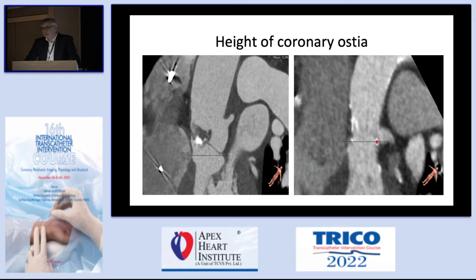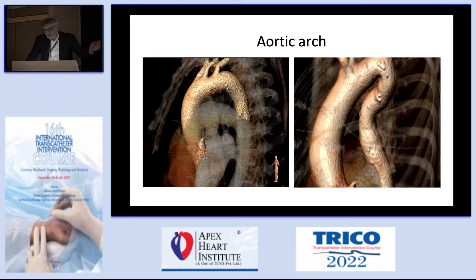You also need to bring the valve in through the aortic arch. On the left-hand side you see a smooth aortic arch, but you will also see patients who have a quite acute angulation. You can imagine what the risk is if you try to advance a TAVI delivery system across an arch like this — there is a risk of perforation or dissection.